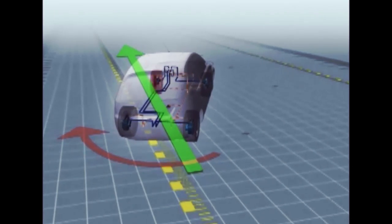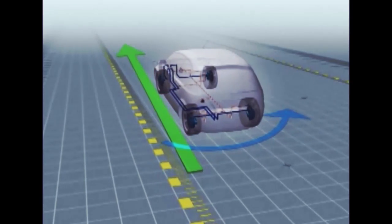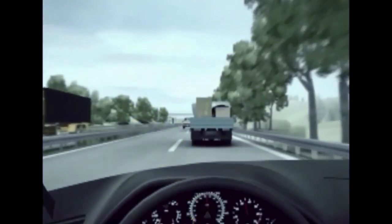In this case, ESC brakes the left front wheel. The turning force is reduced. Instead of going into a skid, the car stays on course, thanks to ESC.